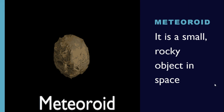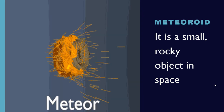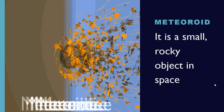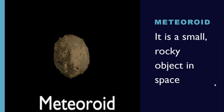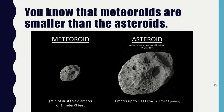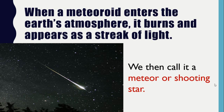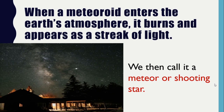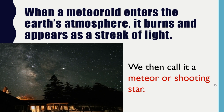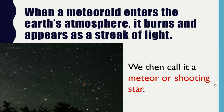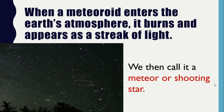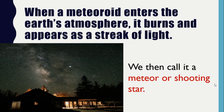Next, let us learn about meteoroids. A meteoroid is a small rocky object in space. Meteoroids are smaller than asteroids. When a meteoroid enters the Earth's atmosphere, it burns and appears as a streak of light. We then call it a meteor, or shooting star.